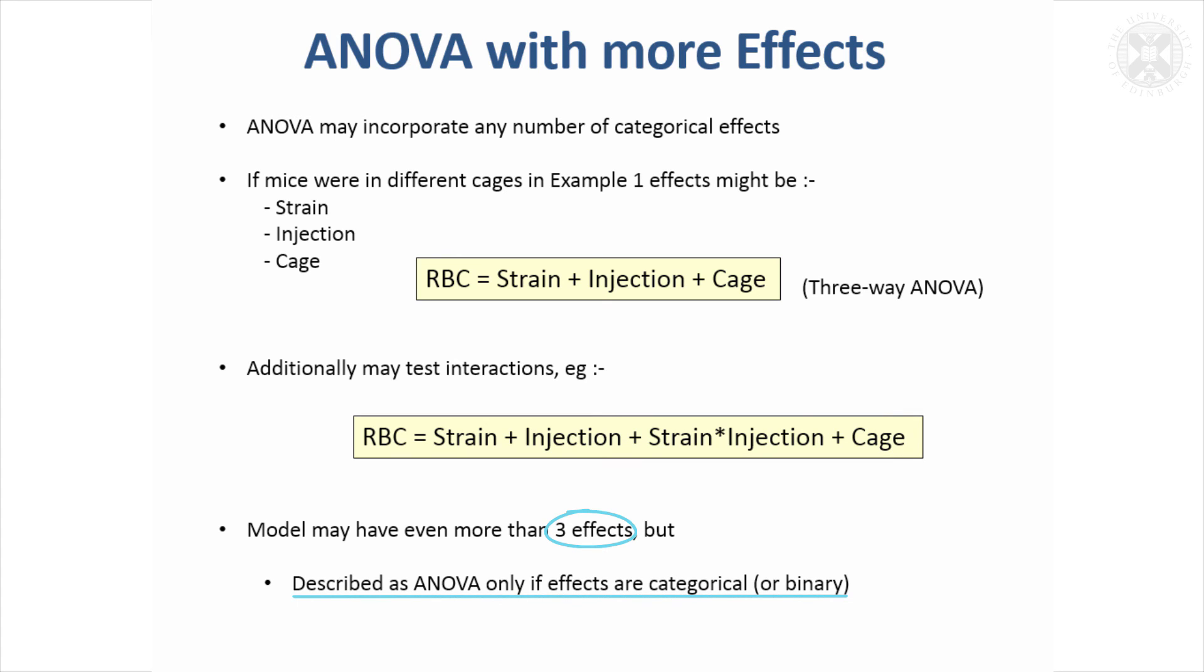The strain, injection, cage—these are all categories. They're groupings of data, so that's what ANOVA is used for.